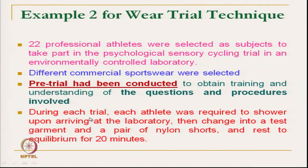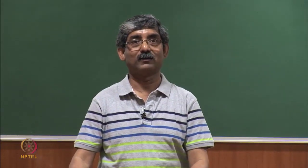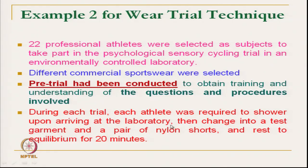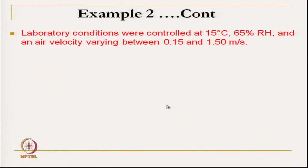During each trial, each athlete was required to shower to keep conditions uniform — a stringent requirement. They had to take a bath upon arriving at the laboratory, then change into the test garment. They wore a pair of nylon shoes and nylon shorts, then rested under equilibrium conditions for 20 minutes. This protocol was fixed for all the athletes. The laboratory condition was fixed at 15 degree Celsius, 65 percent relative humidity, and an air velocity of 0.15 to 1.5 meter per second.